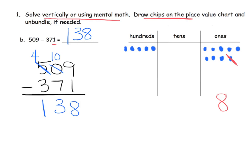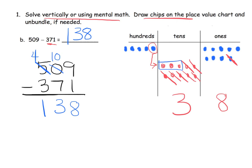We have no tens, but we're supposed to subtract 7 tens. So we're going to unbundle one of these hundreds, and when we unbundle it we get 10 tens. Now we can cross off 7 tens — 1, 2, 3, 4, 5, 6, 7 — leaving us with 3 tens. It's a little hard to see, but there are our 3 tens.